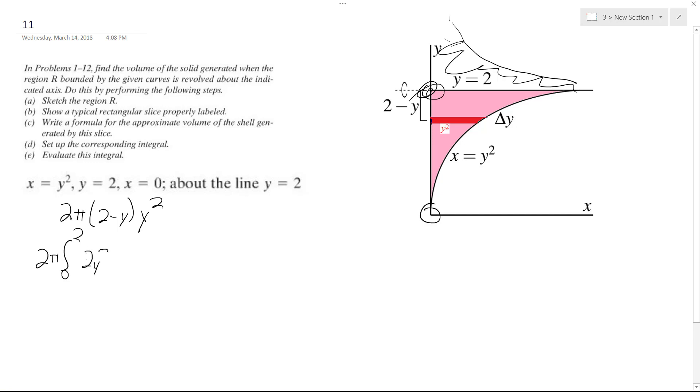And then we're doing the 2y squared minus y cubed dy. So after you integrate this, we have 2y cubed over 3 minus y to the fourth over 4 from 0 to 2.